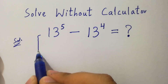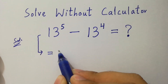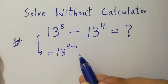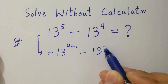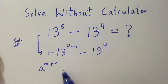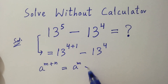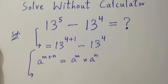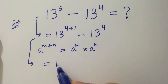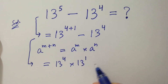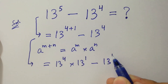This problem is the same as 13 to the power 4 plus 1 minus 13 to the power 4, since 4 plus 1 is 5. Since a to the power m plus n equals a to the power m times a to the power n, then it will be 13 to the power 4 times 13 to the power 1, minus 13 to the power 4.